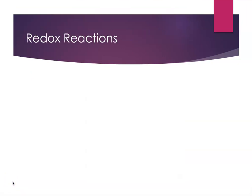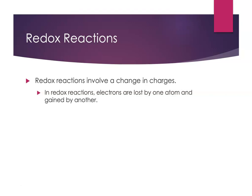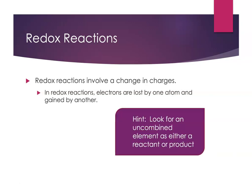Combustion reactions are examples of a broader categorization of reactions referred to as redox reactions. I want students to be able to recognize reactions as being redox. Redox reactions involve a change in charges — different species in the reaction change their charge — because one atom or species is losing electrons and another atom is gaining electrons, resulting in a change in charges. One easy way to recognize a redox reaction is if there's an element as a reactant or as a product — uncombined, not part of a compound. That's the quick and easy way to identify redox reactions.